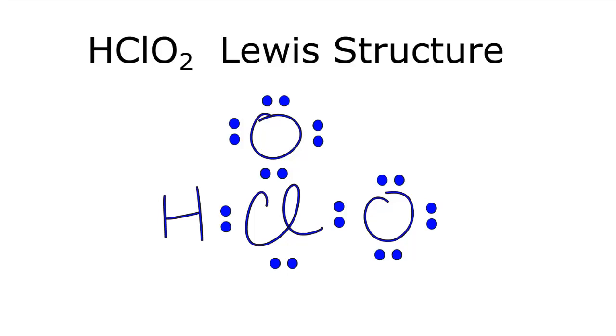When we look at the Lewis structure for HClO2, you may have come up with something like this here. All 20 valence electrons have been used, each of the atoms has a full outer shell. It looks like a pretty good Lewis structure.